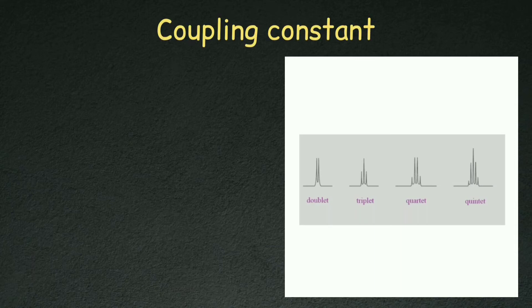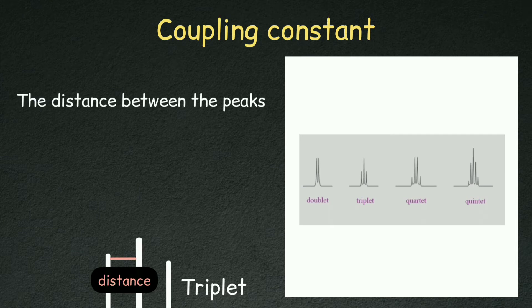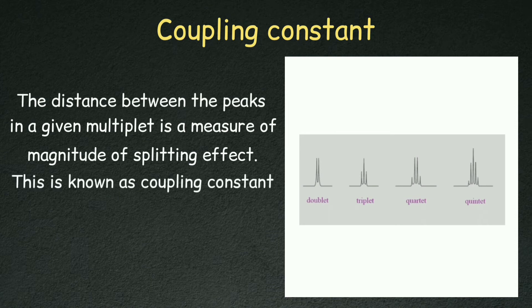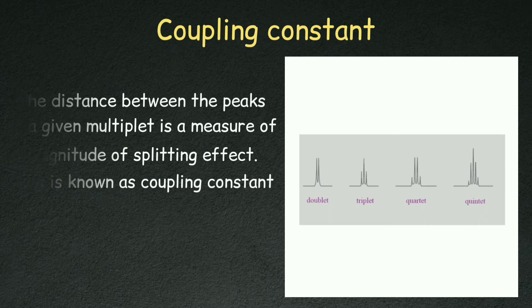Hello everyone, welcome to Learning Science. Today's topic is coupling constant. We will learn about coupling constant, which is the distance between peaks in a given multiplet. It is the splitting effect of magnitude, and we call it coupling constant — the distance between two adjacent peaks.